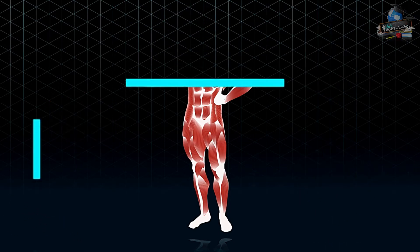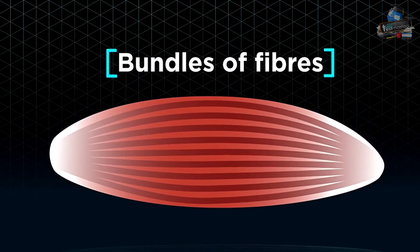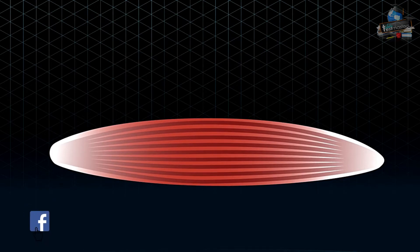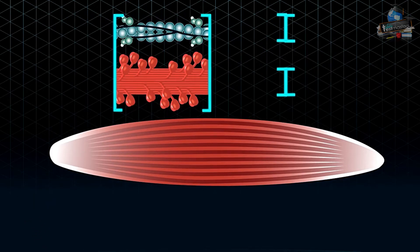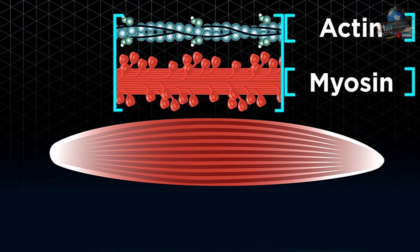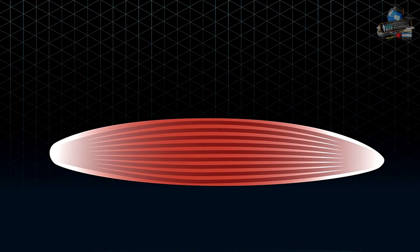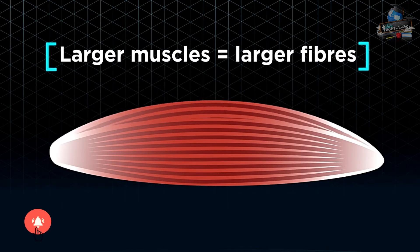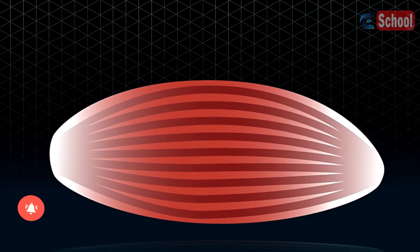Muscles are essentially bundles of fibers that expand and contract to help make movement possible. These fibers are mostly repeating units of actin and myosin protein chains. If you have larger muscles, it does not mean that you have more fibers. It means that the fibers are just much larger.